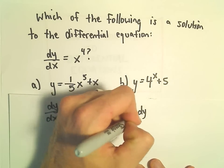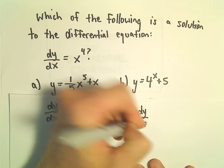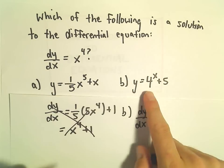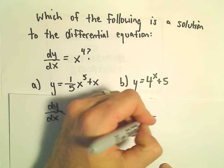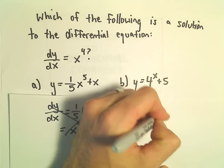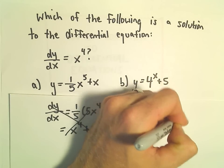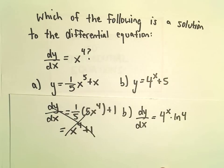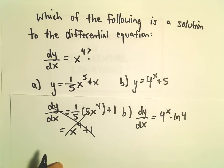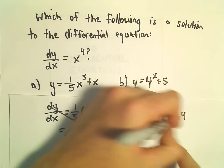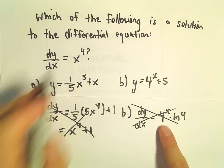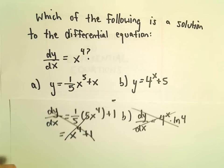Part b: if we take the derivative of 4 to the x plus 5, the derivative of 4 to the x is going to be 4 to the x times the natural logarithm of 4. The plus 5 just turns into a constant. Again, that's definitely not just x to the fourth.